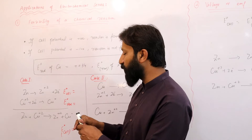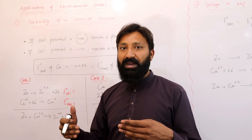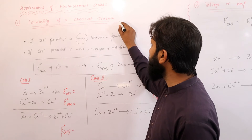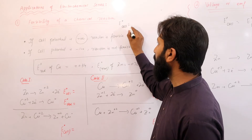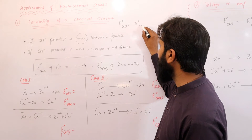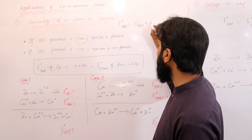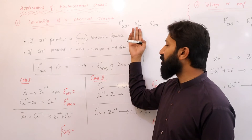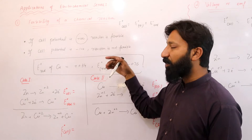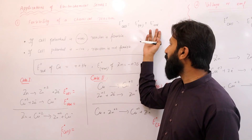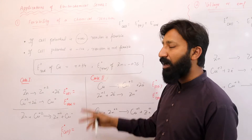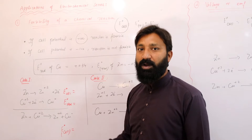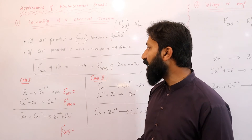First point: if cell potential is positive. Cell potential किसी भी element का जो हम calculate करते हैं वो equal होता है E oxidation plus E reduction। मतलब उन दो elements में से अगर एक की oxidation हो रही है तो उसका oxidation potential, plus second element की reduction potential — इन दोनों का sum करते हैं। अगर sum positive हो तो reaction is feasible, and if cell potential is negative then reaction is not feasible।